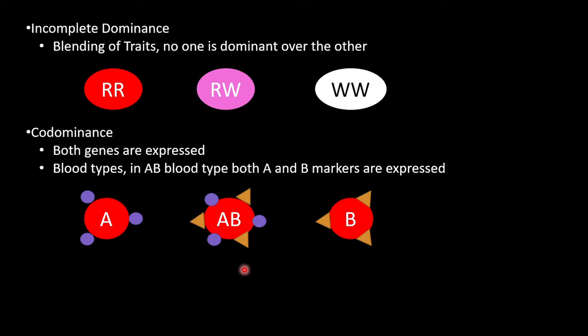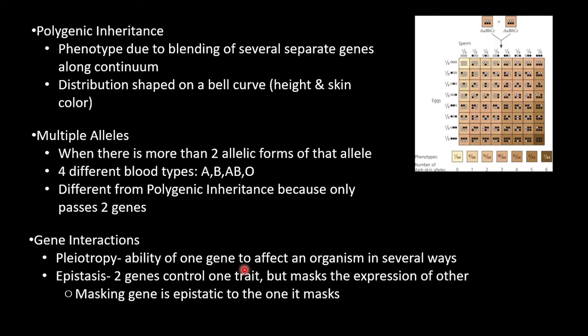Codominance, on the other hand, leads to the appearance of both traits. Blood type is a perfect example of this. The A blood type contains A markers and the B blood type contains B markers. The combination leads to blood type AB, which has both A and B markers, not a mixing of the two like it was in incomplete dominance.